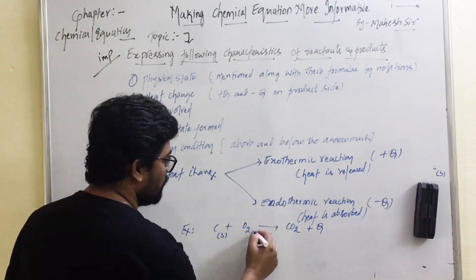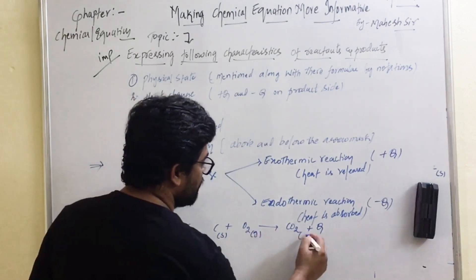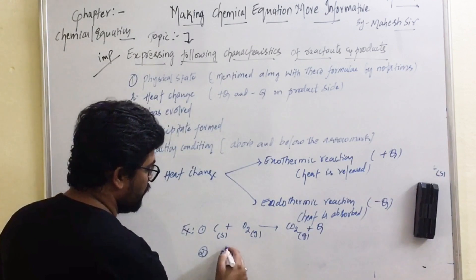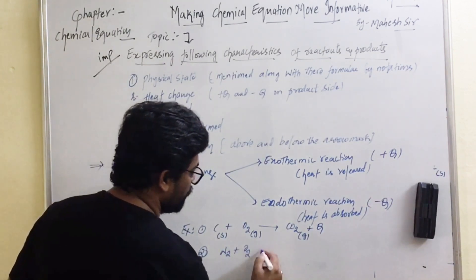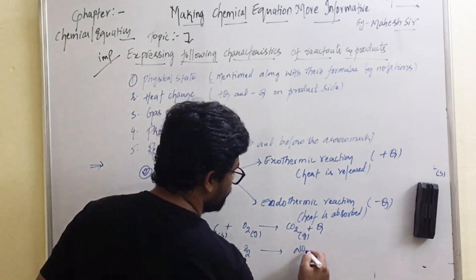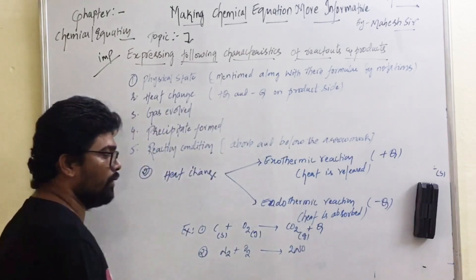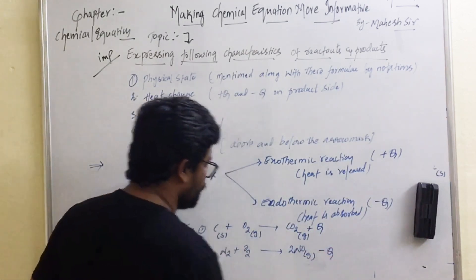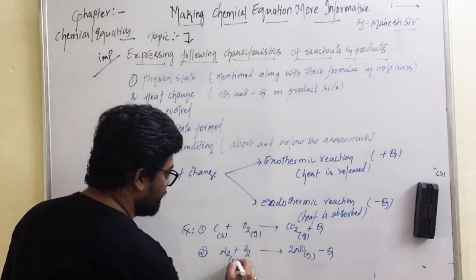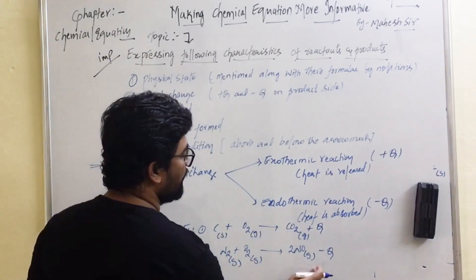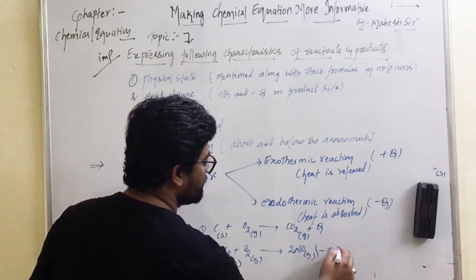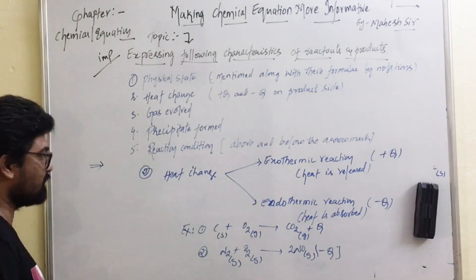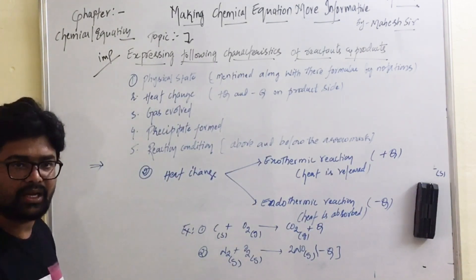In that example, carbon is solid and oxygen is a gas, giving CO₂ gas. The next example: N₂ + O₂ gives rise to 2NO, which is also a gas. This reaction is endothermic, so it is represented with minus Q on the product side. This is how we express heat change.